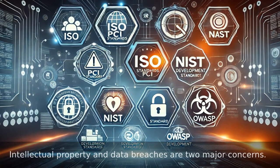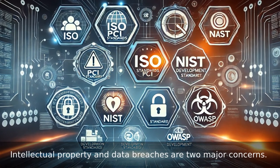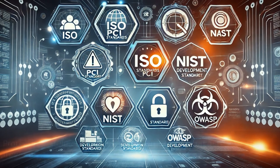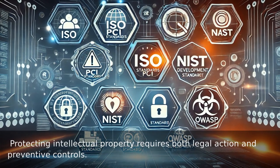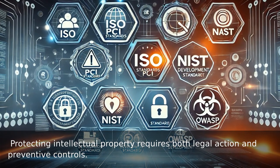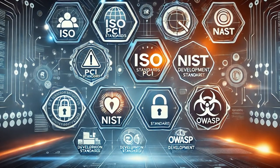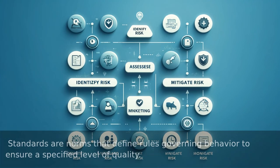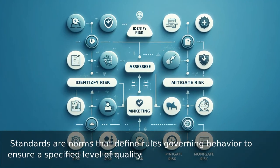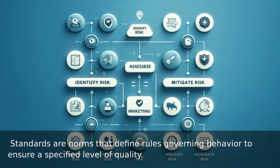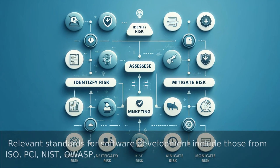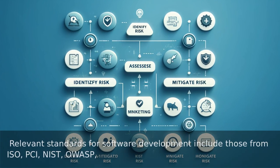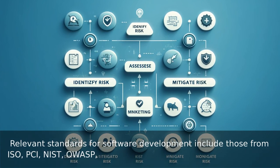Intellectual property and data breaches are two major concerns. Protecting intellectual property requires both legal action and preventive controls. Standards are norms that define rules governing behavior to ensure a specified level of quality.